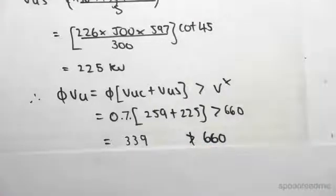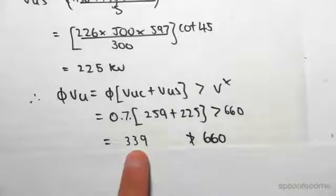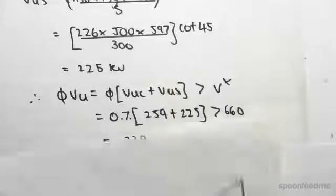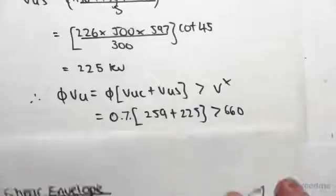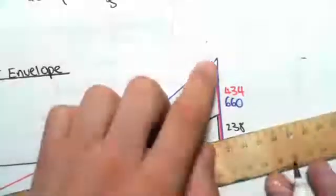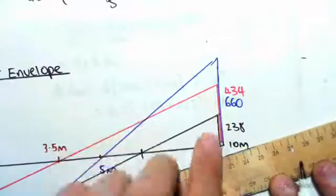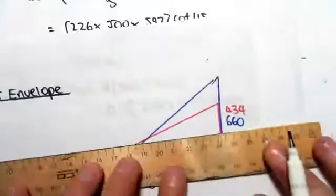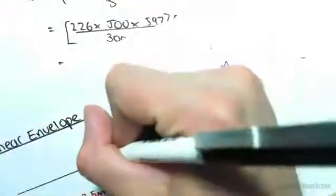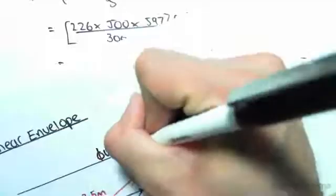Okay. So now what we do is, everywhere up to 339, it's adequate to use the 300mm spacing. So if I come to our shear envelope, we've got a value of 339. So if this is 660, that's 434, that's 238. 339 is somewhere there. So that is φVU, which equals 339.